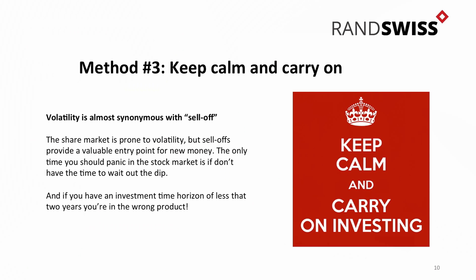Probably the method most important to anyone who has an equity portfolio is just to keep calm and carry on investing. Volatility has almost become synonymous with sell-off - when the market comes down, people say it's volatile. But essentially, if your time horizon is over two years, volatility is your best friend because this is the time where you can buy more stock, allocate more of your portfolio to equity investments, get in at better prices. It's essentially just the market on sale - the market is cheap.